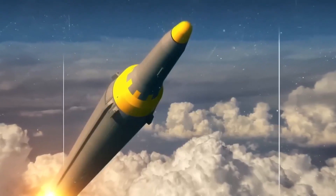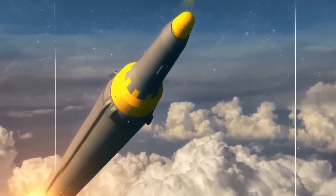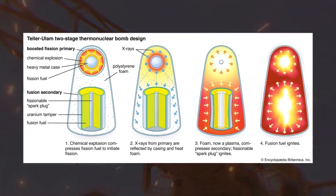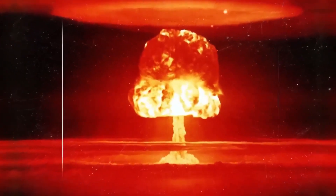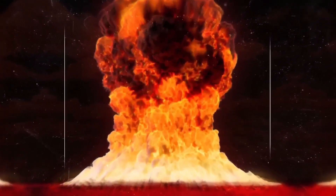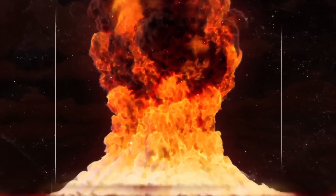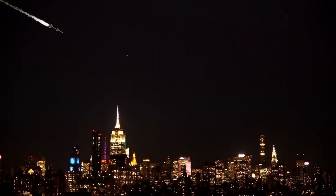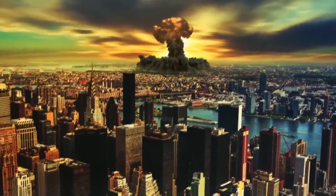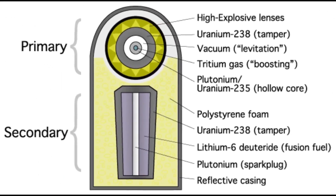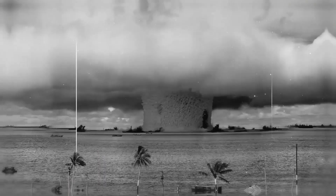In contrast, a hydrogen bomb, or H-bomb, operates on the principle of nuclear fusion — the merging of atomic nuclei. This process releases significantly more energy than nuclear fission alone, resulting in explosions of unparalleled magnitude. Hydrogen bombs, also referred to as thermonuclear bombs, employ a staged design that combines a fission trigger with a fusion secondary stage. The fission explosion triggers the fusion reactions, leading to a chain reaction of unprecedented power.